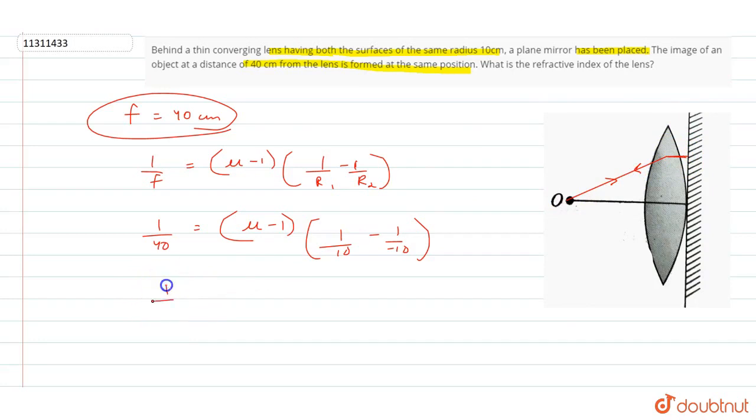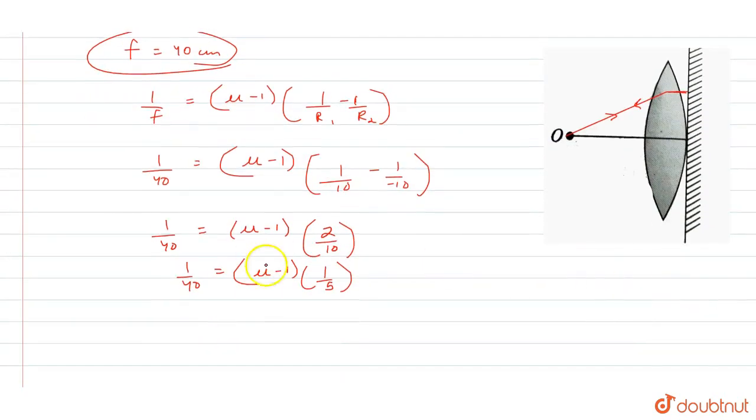So if I am solving, then 1 by 40 is equal to mu minus 1, times 2 by 10, which is equal to mu minus 1 into 1 by 5. 1 by 40 is equal to this, so this is 8. Mu is equal to 1 plus 1 by 8, that is equal to 9 by 8.